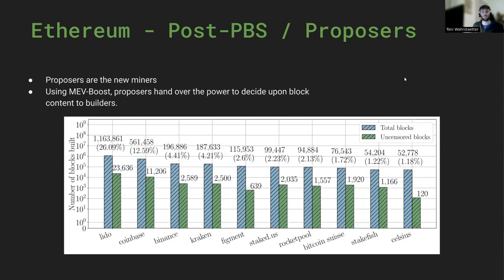Third, proposers — proposers are the new miners — and also proposers can censor the blockchain by just not connecting to a relay that is non-censoring, or by building blocks themselves, which is called vanilla building, and thereby ensuring that censorable content doesn't make it on-chain.